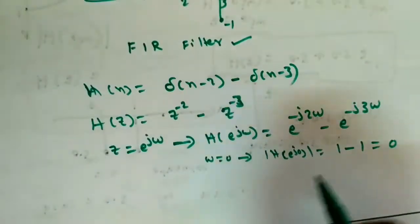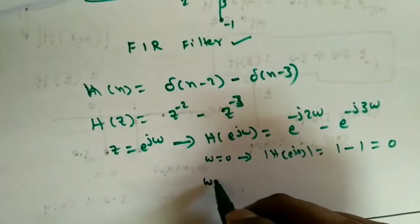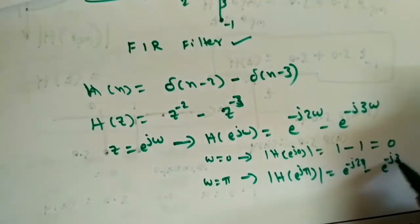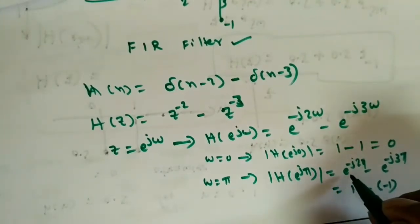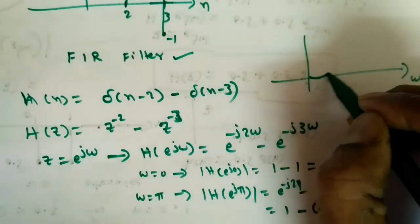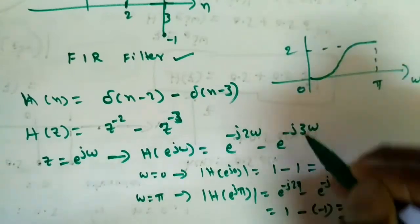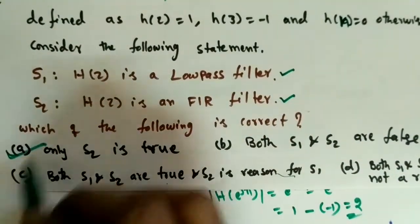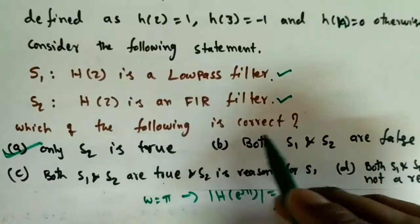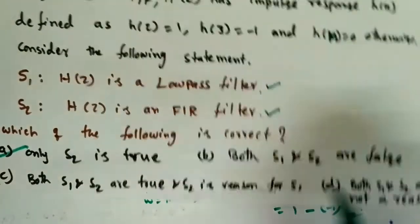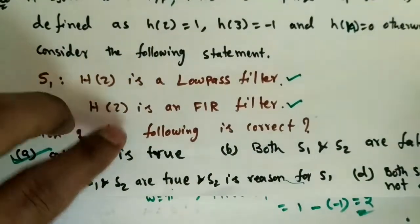At ω=0 the magnitude is 0, so it is not a low-pass filter. At ω=π: |H(e^(jπ))| = |e^(-j2π) - e^(-j3π)| = |1 - (-1)| = 2, which is a finite nonzero value. So the frequency response is high at ω=π and zero at ω=0 — this is a high-pass filter, not a low-pass filter. Therefore S1 is false. The correct option is: only S2 is true.